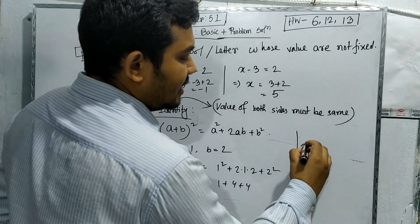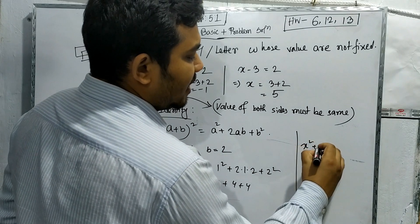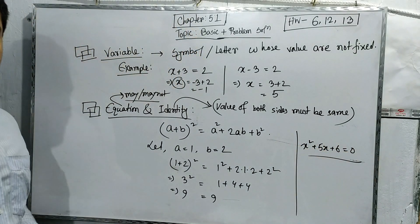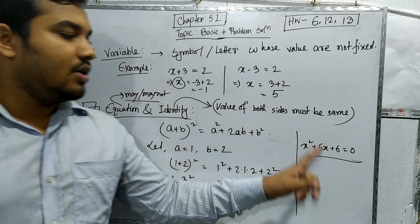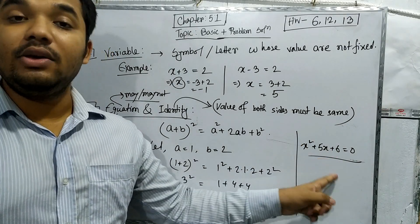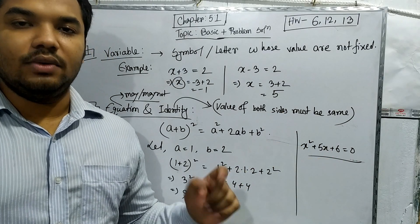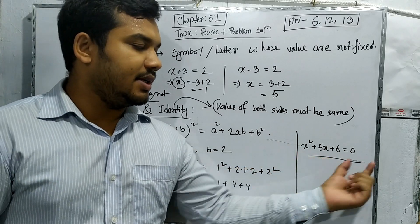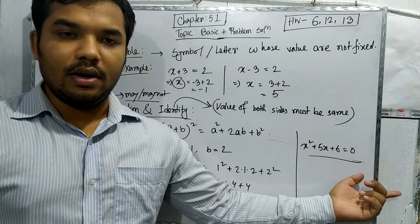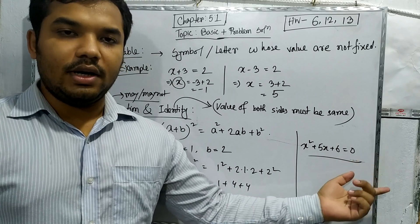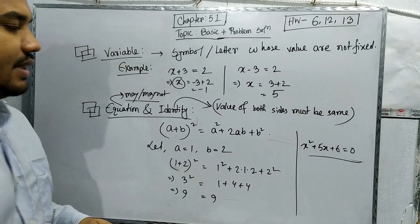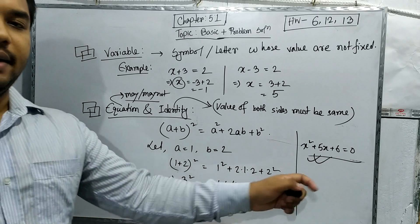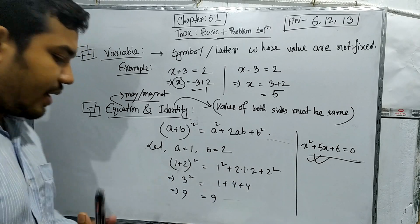On the other hand, if we write x squared plus 5x plus 6 equals 0, this is an equation but not an identity. Why? Because the value of the left side and right side can be not equal. That's why we say this is just an equation, not an identity.